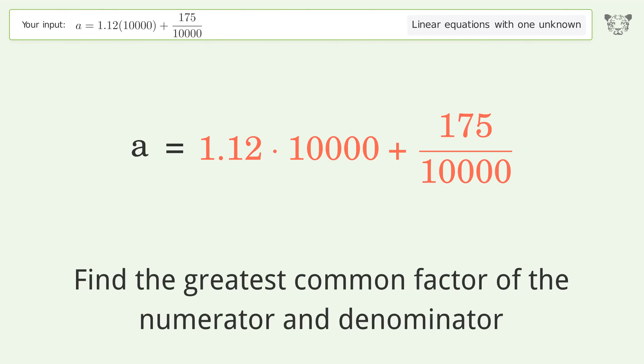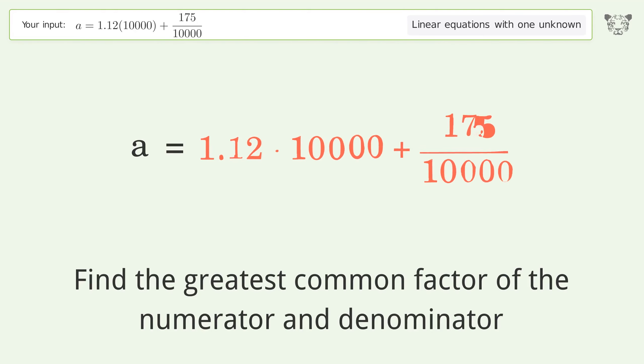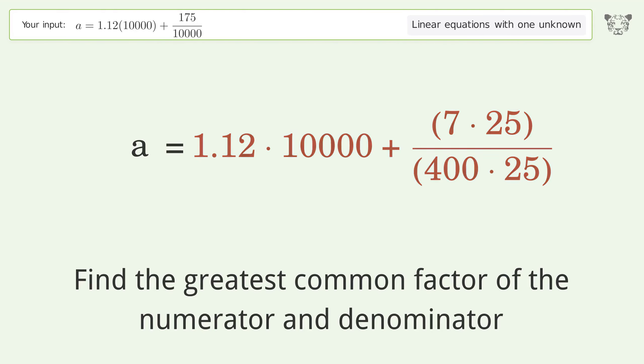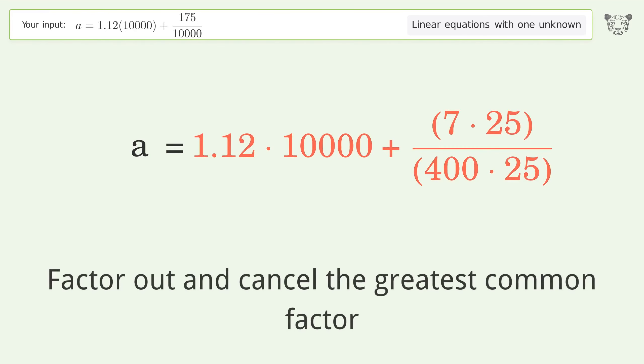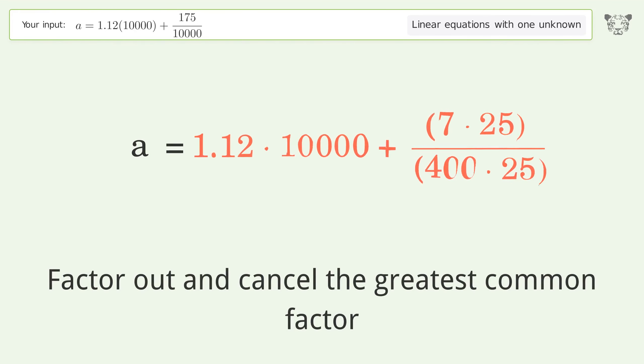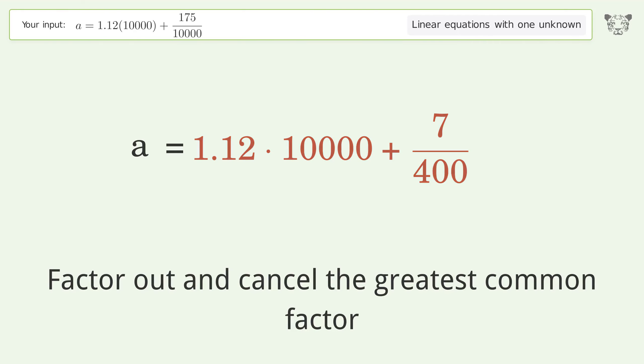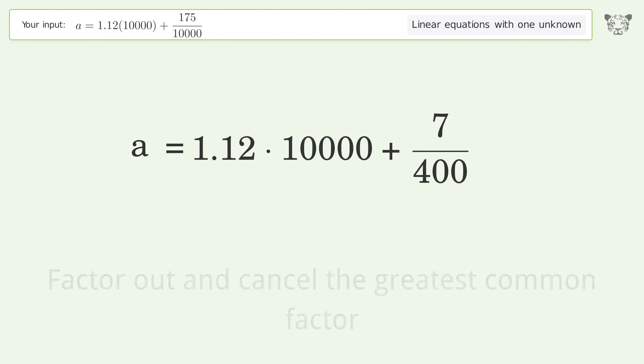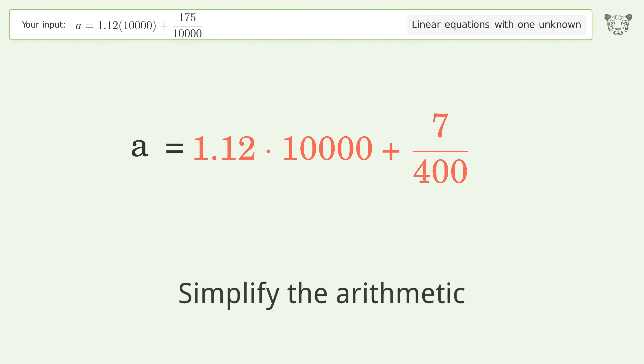Factor out and cancel the greatest common factor of the numerator and denominator. Then simplify the arithmetic.